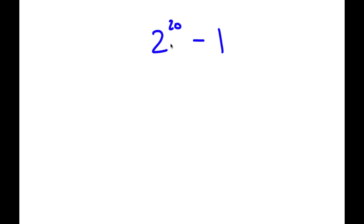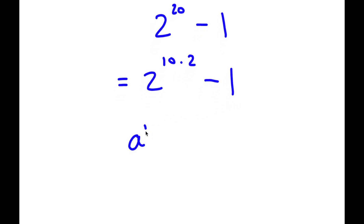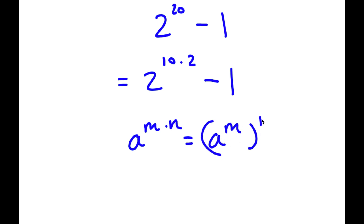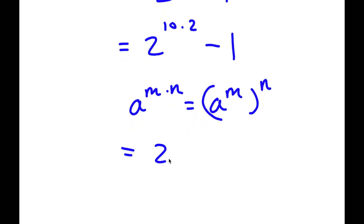In this problem, I have 2 to the power of 20 minus 1. To solve this, I'm going to first rewrite this as 2 to the power of 10 times 2 minus 1. Now, if I have something in the form a to the power of m times n, this is equal to a to the power of m to the power of n. So 2 to the power of 10 times 2 I can rewrite as 2 to the power of 10 to the power of 2, and I have this minus 1.